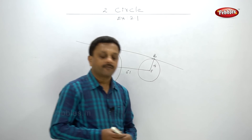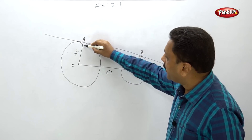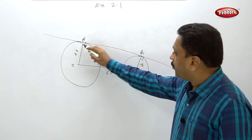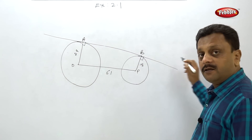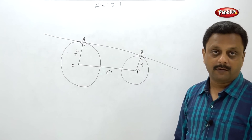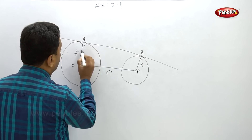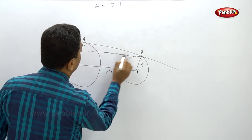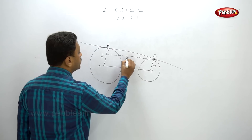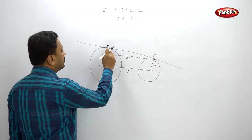First analyze the figure: both radii are perpendicular to the tangent, so these two radii are parallel to each other. We can draw a line parallel to OP, forming a parallelogram. Opposite sides of the parallelogram are congruent, so this side is also 61. Since one radius is 18 and the other is 29, the difference is 11.